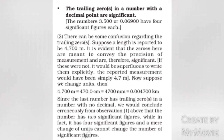There can be some confusion regarding the trailing zeros. Suppose a length is reported to be 4.700 m — it is evident that the zeros here are meant to convey the precision of measurement and are therefore significant. If these were not significant, it would be superfluous to write them explicitly; the measurement would simply be written as 4.7 m. Now, suppose we change units: 4.700 m equals 470.0 cm equals 4700 mm equals 0.004700 km. Since the last number has trailing zeros in a number with no decimal, we would conclude erroneously that it has two significant figures, while in fact it has four significant figures.